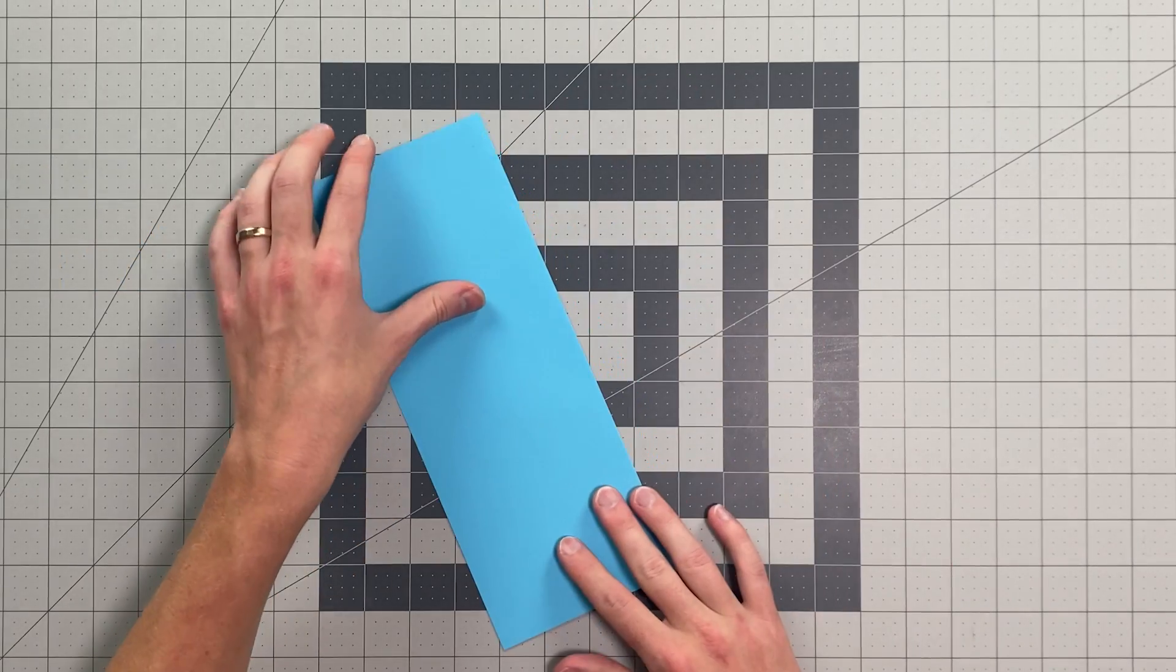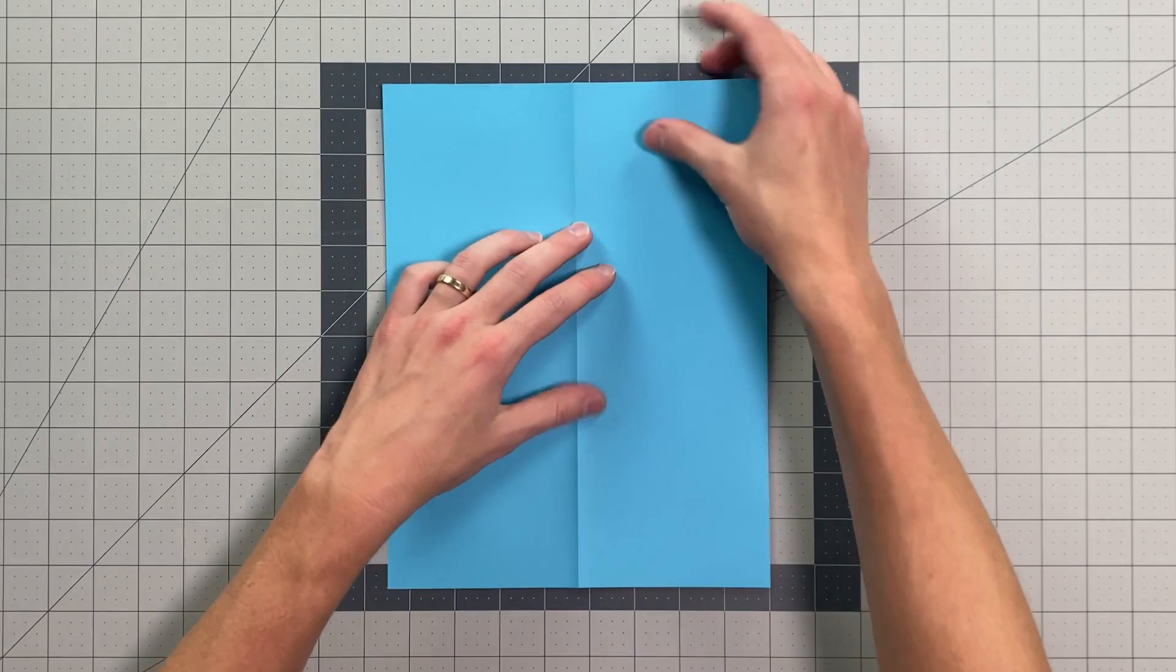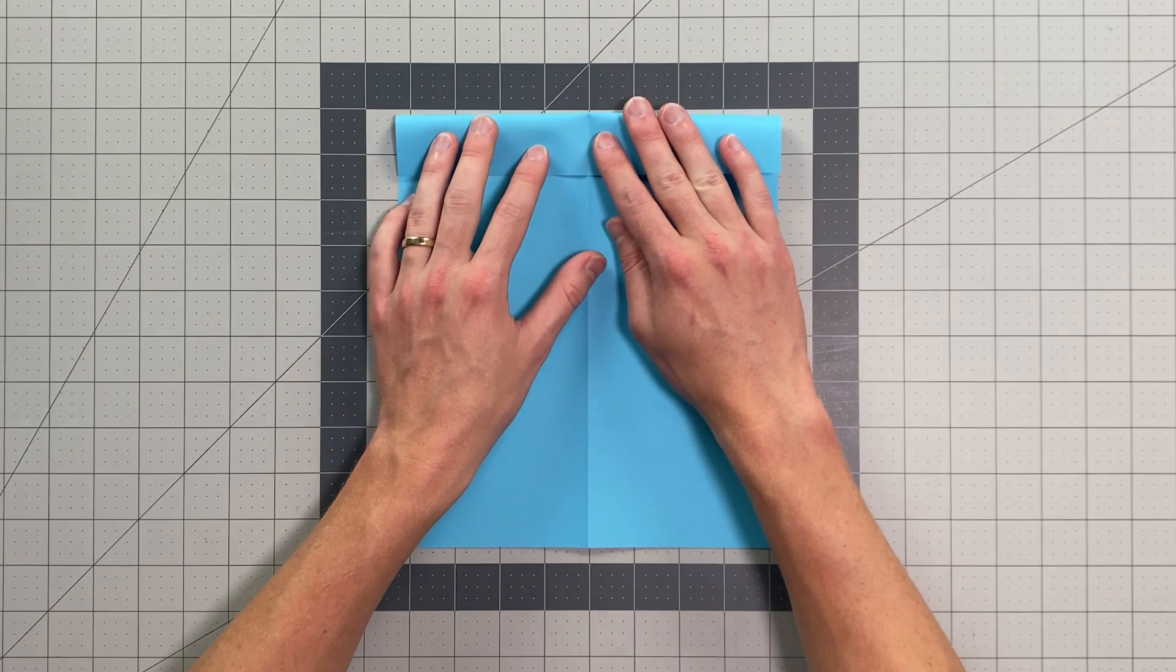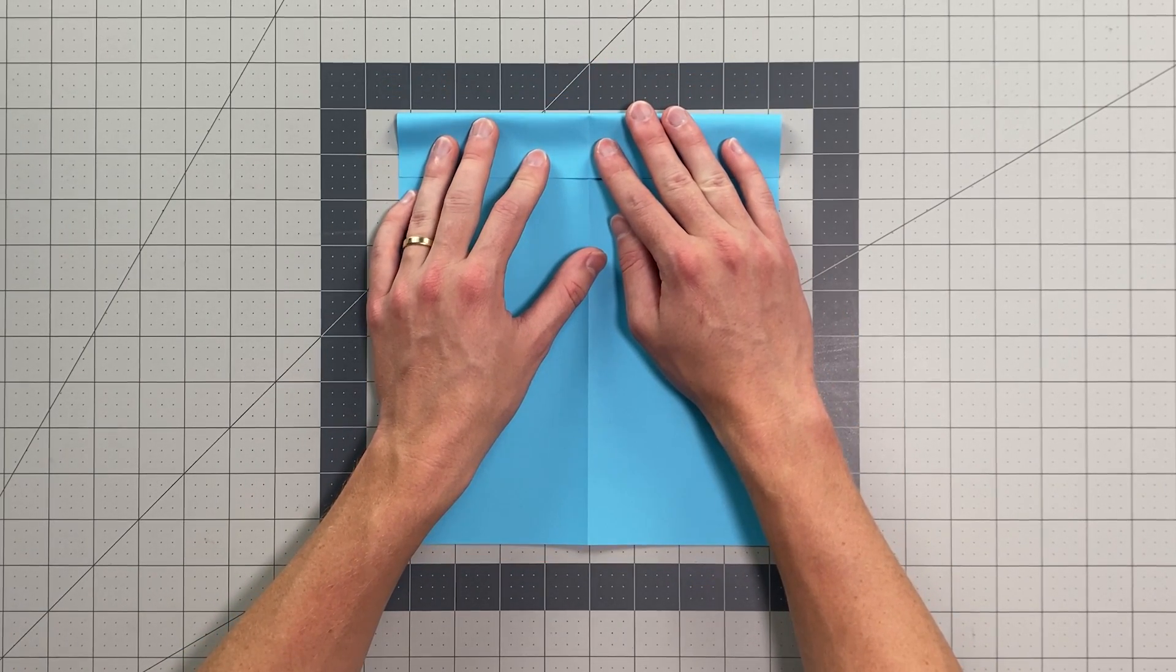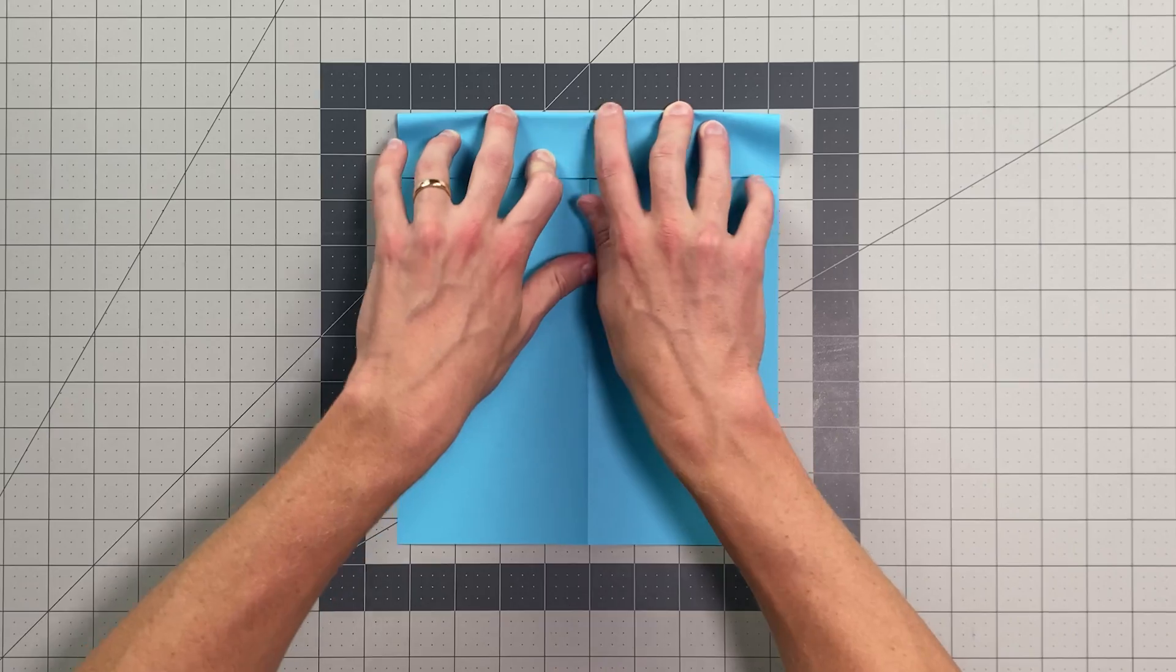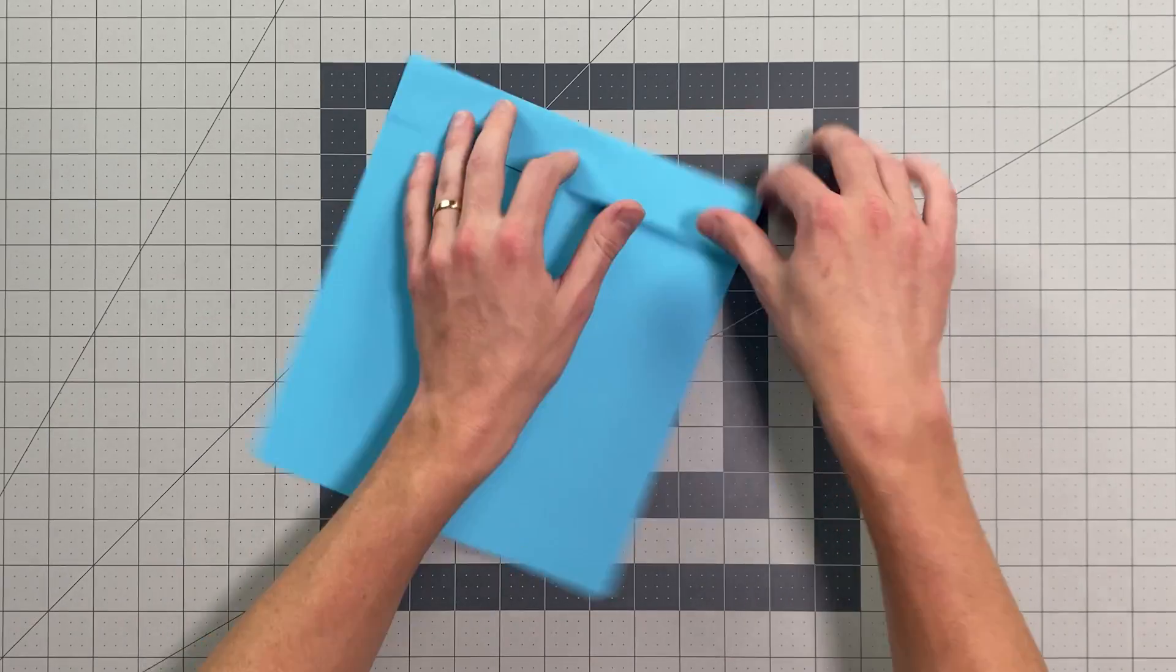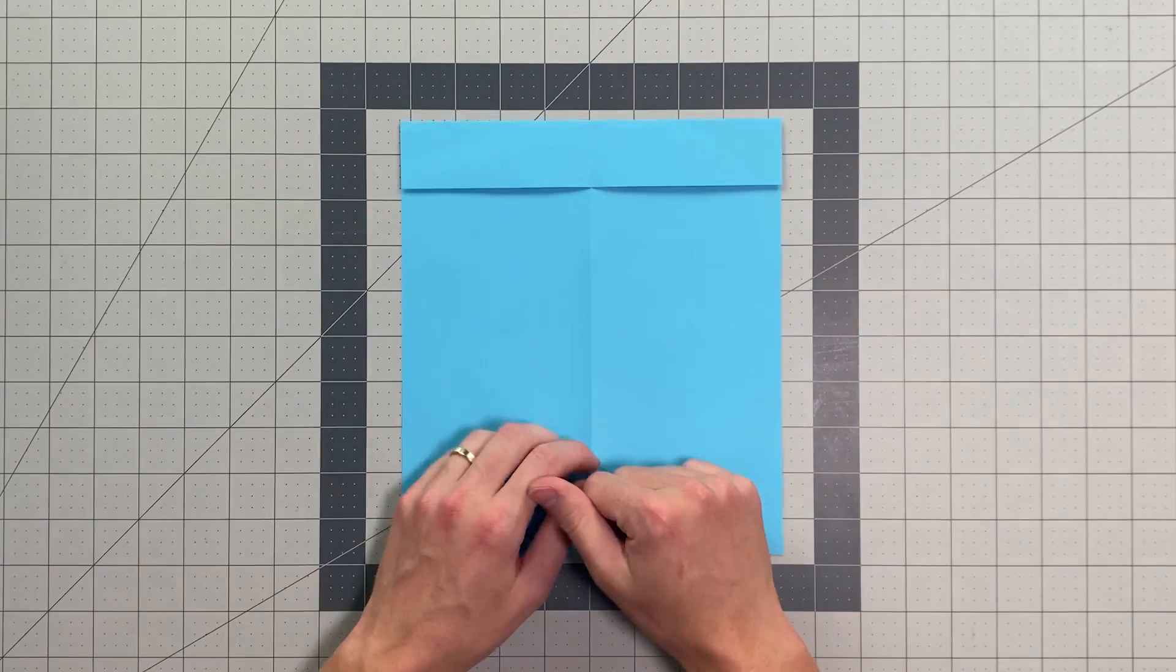Now once you've done that, go ahead and open your paper up, and you're going to fold a band that's about an inch and a half at the top, or four centimeters roughly. This is an estimation. It doesn't have to be exactly the same size as mine, but something like that should work well for you.